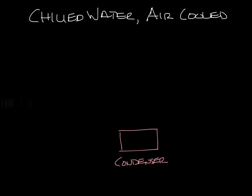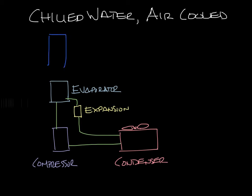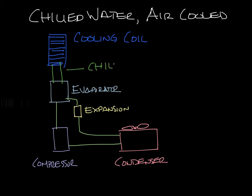Let's draw in our air-cooled condenser and our compressor, our evaporator, and our expansion device. Now let's draw the refrigerant route from the compressor to the condenser to the expansion device to the evaporator and back to the compressor. You also have a chilled-water coil. The evaporator cools down water that is circulated to the cooling coil, which cools down the supply air. The supply air transfers its heat to the cooling coil, which warms up the water, and the water travels back to the evaporator to be cooled down again.